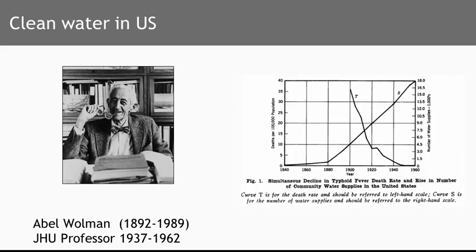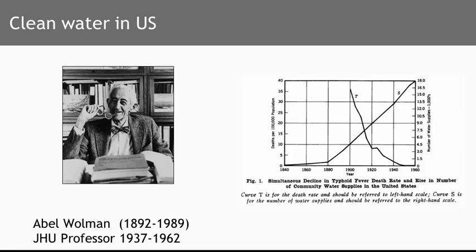This decline in typhoid is matched by the availability of water supplies rising from very few at the beginning of the century up until the 1960s. Now, how did Wallman do this? Was he offering a simple solution? Did he simply take a handle off a pump? It was far more complicated than that.